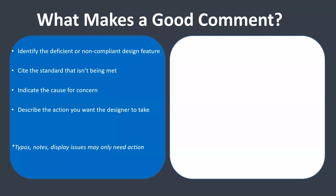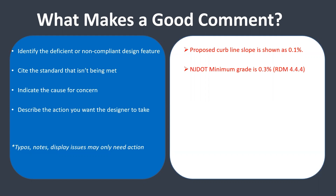Simply drawings are not going to do it — you don't want to leave anything up to interpretation for an LPA or designer. A comment should always include four things. First, identify the deficient design feature, such as noting the value that is shown. Second, cite the standard that isn't being met — for example, the minimum grade is higher than what's shown, so you're below the minimum according to the roadway design manual. Third, indicate your cause for concern — for instance, you're worried this is going to create a ponding issue if the slope is too flat.